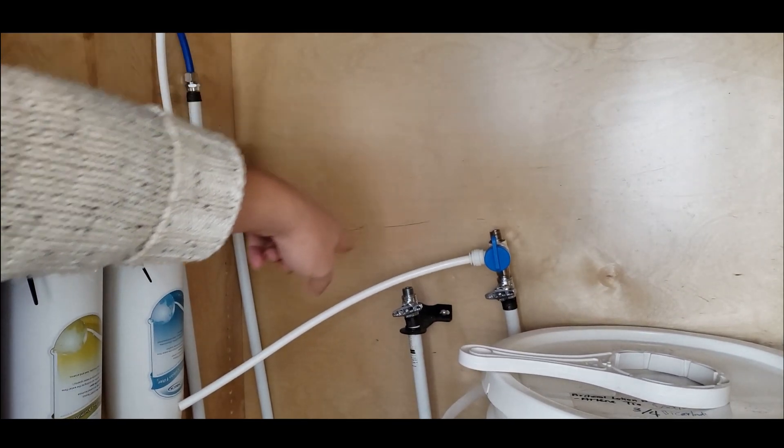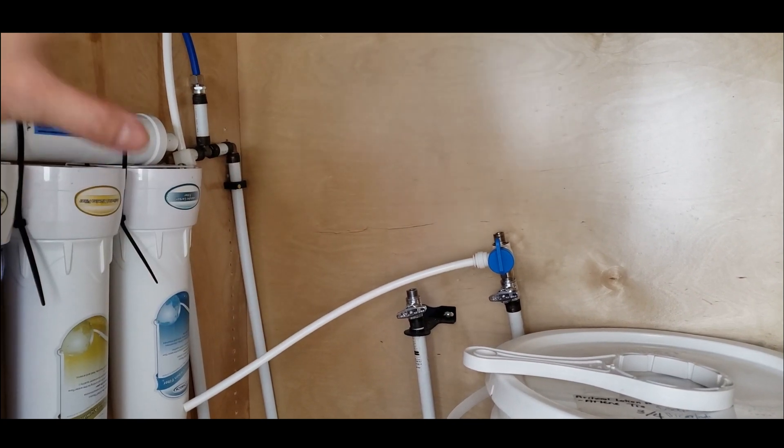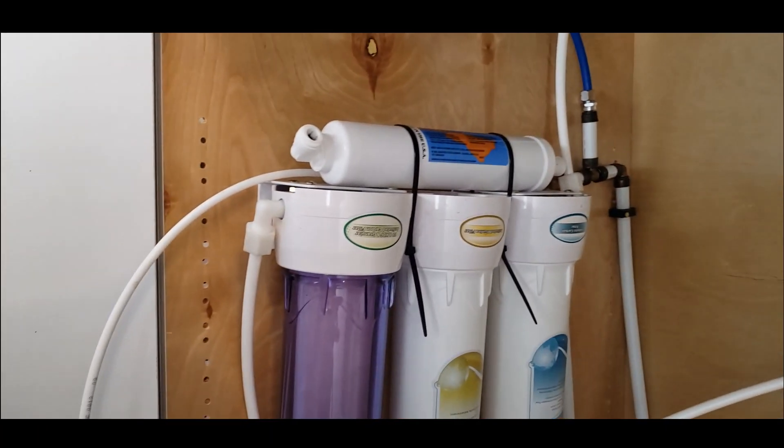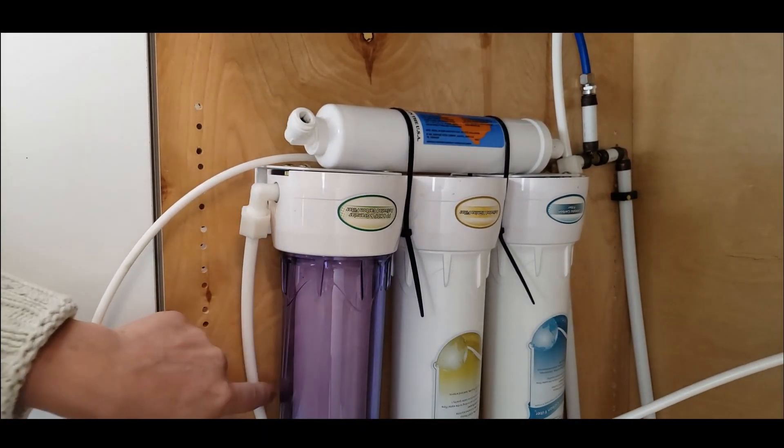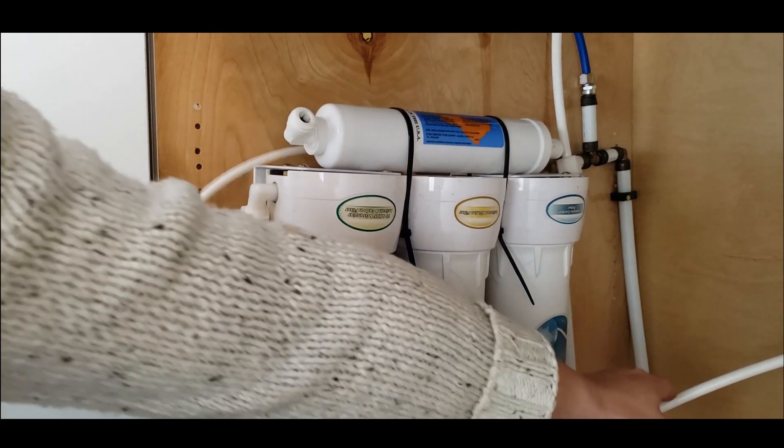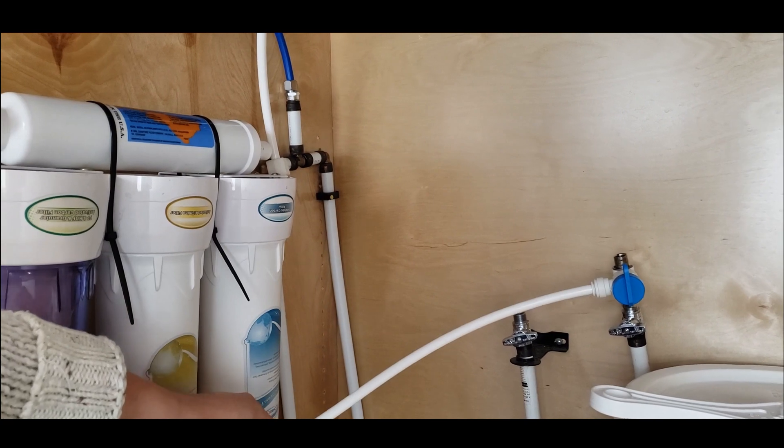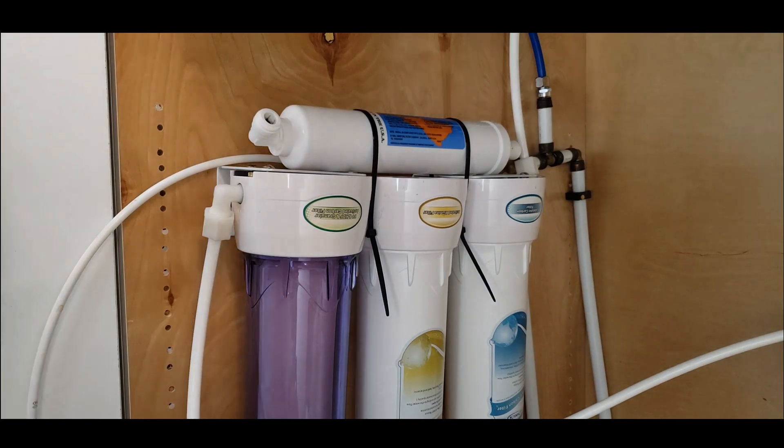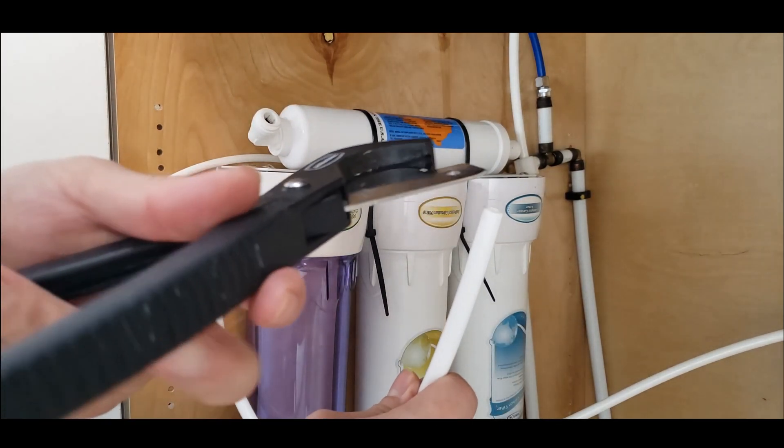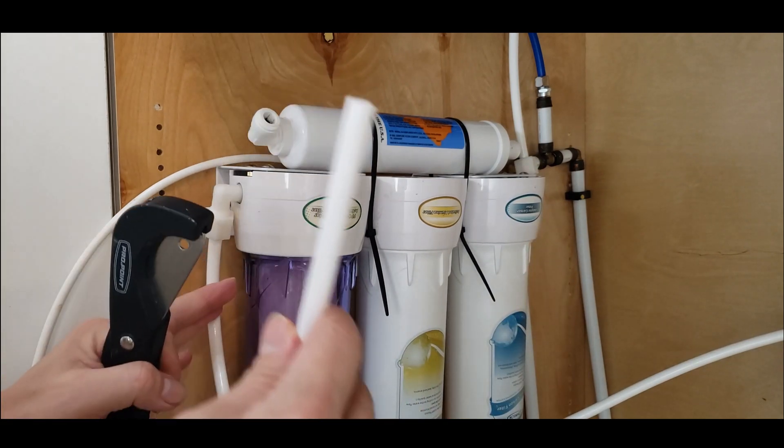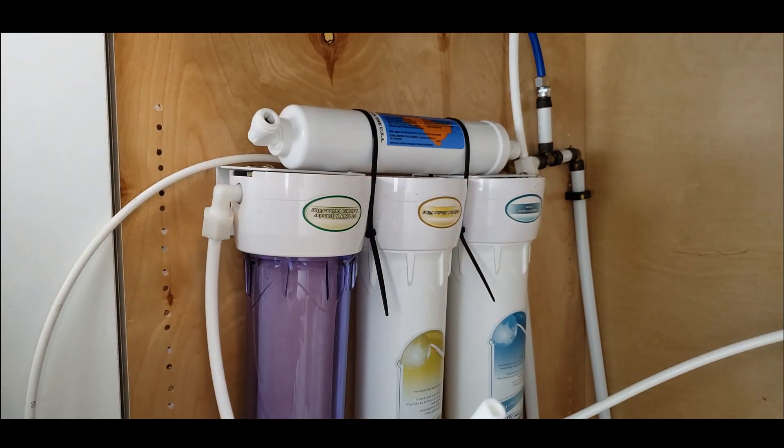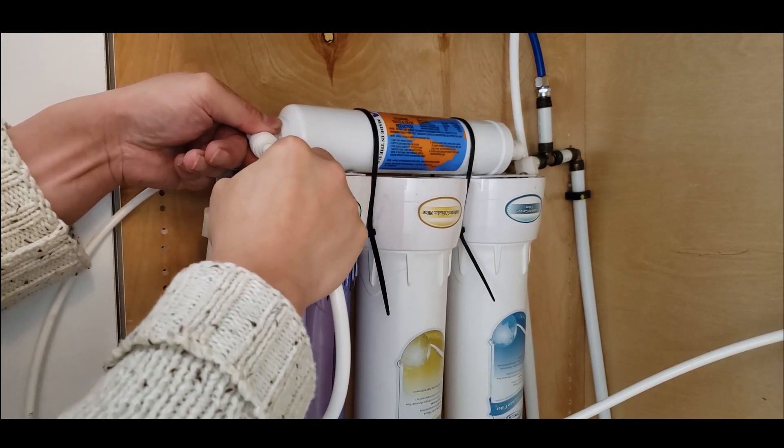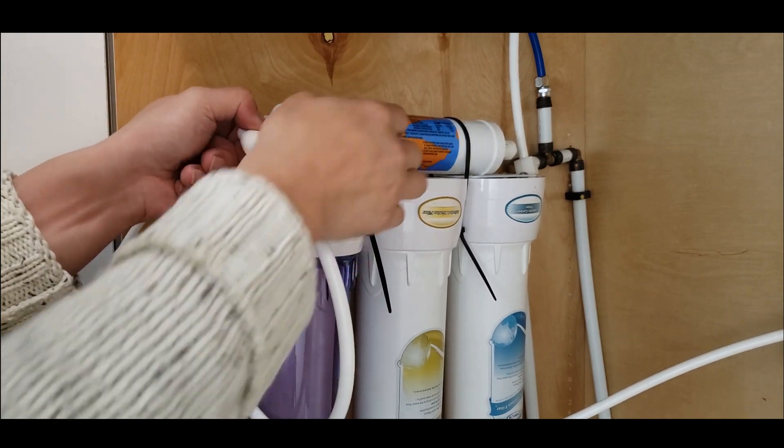Next, on the incoming line where the water is going towards the filter, just imagine this goes towards the filter, you're going to cut it off. Once it's like this, you could install it through here. Push it, make sure you push it in deep enough.